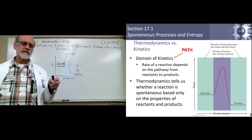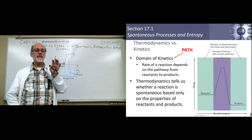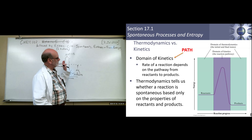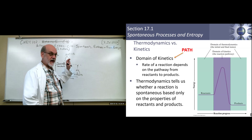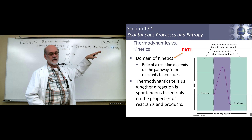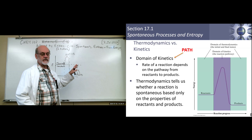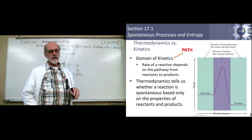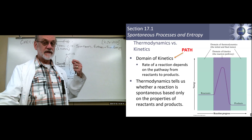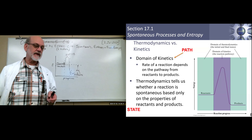The kinetic discussion is determined by the path. If your reaction proceeds without a catalyst, it goes through one mechanism; if it has a catalyst, it goes through a different mechanism, which allows it to go faster. So for kinetics, this is called a path function — the path that it takes determines the outcome speed.